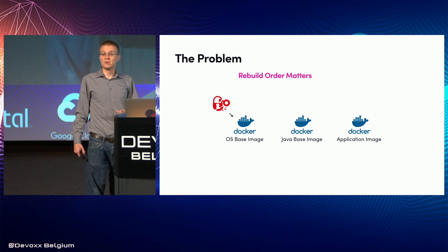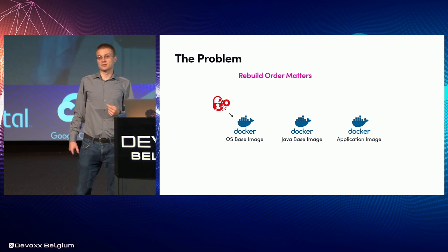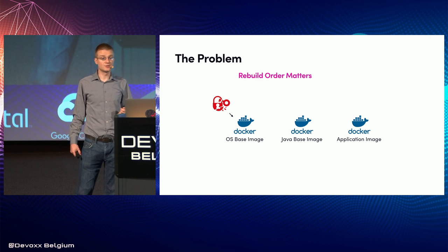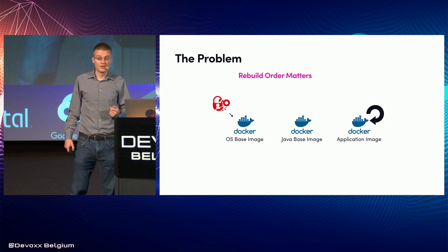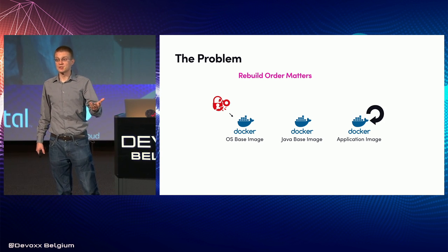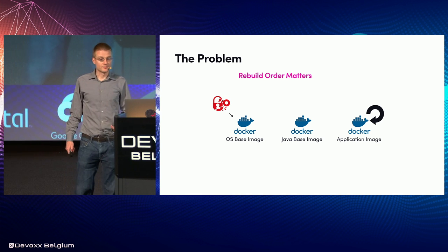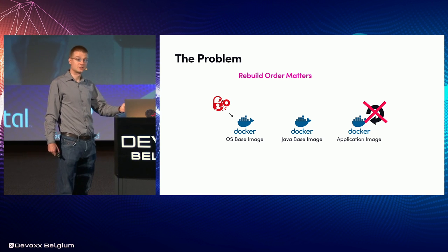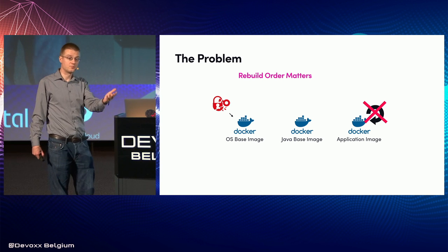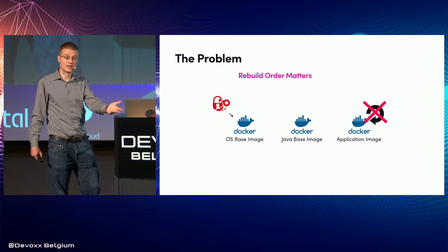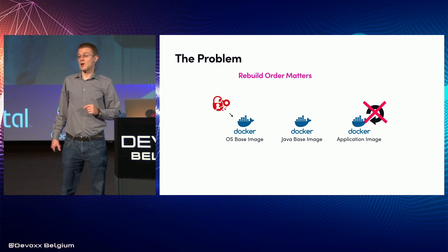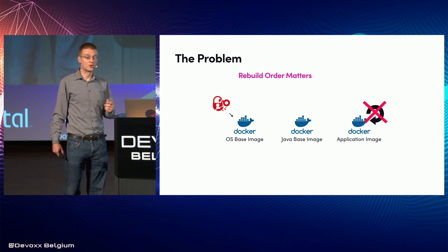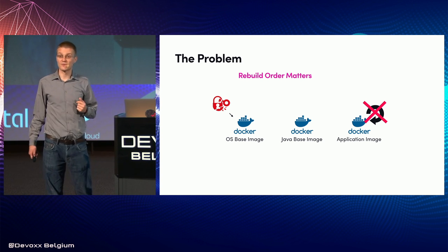The order in which you rebuild your images also matters. If for example there's a vulnerability in the base OS image and you try to rebuild your application image, that won't work. You have to first rebuild the base OS image, then your Java base image in this example, and then a rebuild of the application will pull down that package that has the vulnerability fix.